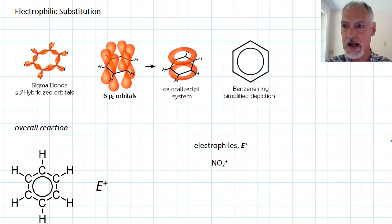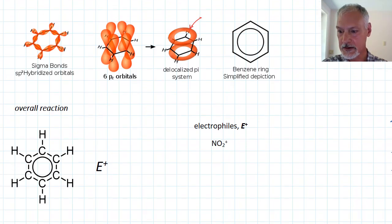These pi electrons, these electrons that are here, are very susceptible to attack. Many substances can be attracted to these delocalized electrons. Let's take a look at the overall reaction that involves these substances that like the electrons.